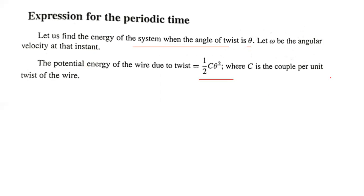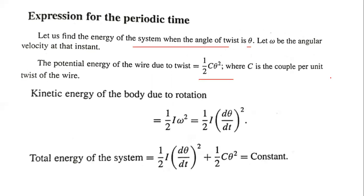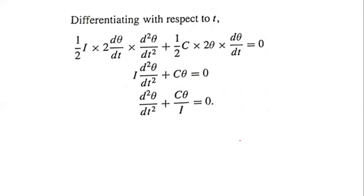The potential energy is one-half C theta squared, where C is the couple per unit twist. The kinetic energy is one-half I omega squared, which equals one-half I (d theta/dt) squared. According to the law of conservation of energy, the total energy is constant: one-half I (d theta/dt)² plus one-half C theta² equals constant. Differentiating, we get d²theta/dt² plus C/I times theta equals zero.